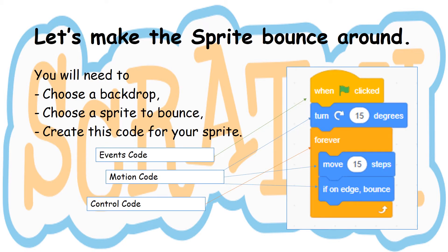So let's make the sprite bounce around. You'll need to choose a backdrop — we've done this before. Choose a sprite that you want to bounce around the screen and you'll need to create this code for your sprite. You'll have some events code: when green flag is clicked, you'll have turn 15 degrees, control code with move 15 steps, and if on edge, bounce. That means when the sprite touches the edge of the screen it bounces back into the screen.